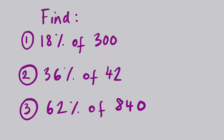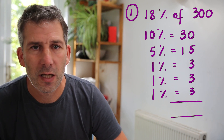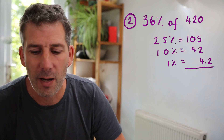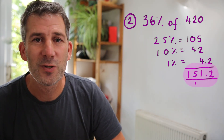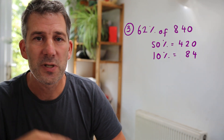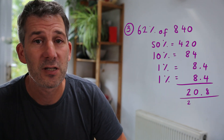Here are three questions for you to have a go at. Question one: find eighteen percent of three hundred. I found ten percent (thirty), five percent (fifteen), and three lots of one percent (three each), adding up to fifty-four. Question two: find thirty-six percent of four hundred and twenty. I used twenty-five percent (one hundred and five), ten percent (forty-two), and one percent (four point two), giving one hundred and fifty-one point two. Question three: find sixty-two percent of eight hundred and forty. I used fifty percent (four hundred and twenty), ten percent (eighty-four), and two lots of one percent (eight point four each), giving five hundred and twenty point eight.